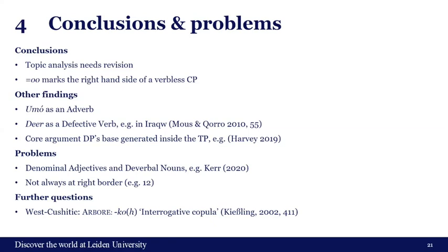Another question raised is that the West Cushitic language Arbore has a suffix 'ko' analyzed as an interrogative copula, which might be related to our 'o' in Gorwa according to Keisling. Thank you for listening.